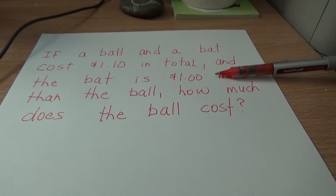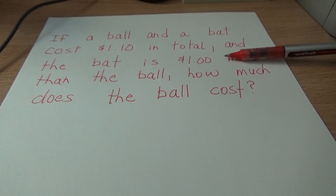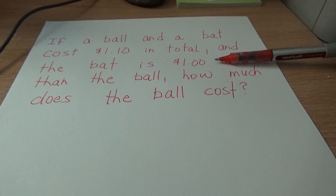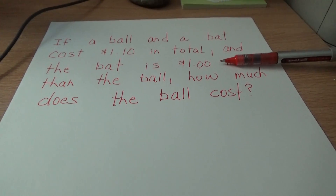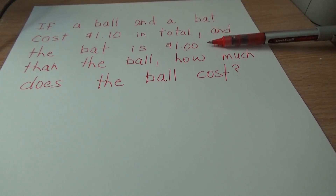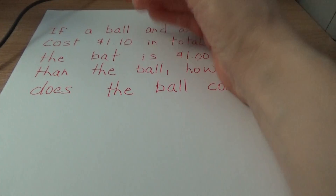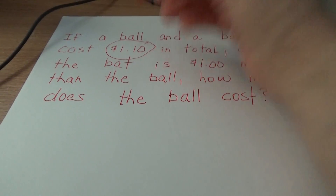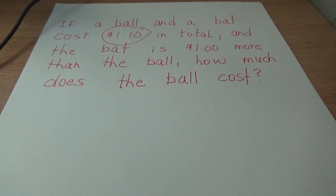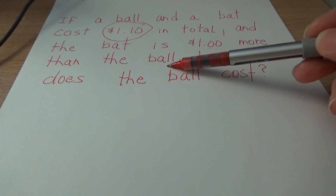If you got rid of the word 'more' and it just said the bat is a dollar, how much would the ball cost? Well, then we're told exactly how much the bat is — the bat's a dollar, so obviously the ball is ten cents because the total has to be a dollar ten. But we're not told the bat is a dollar. All we know is the bat is a dollar more than the ball.